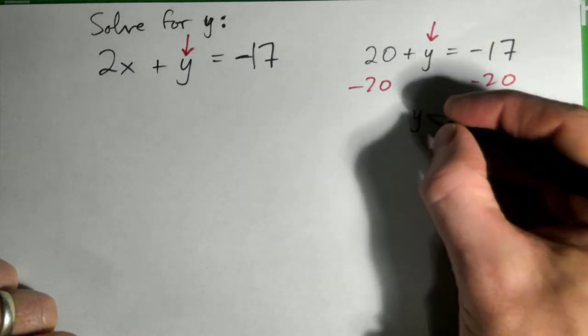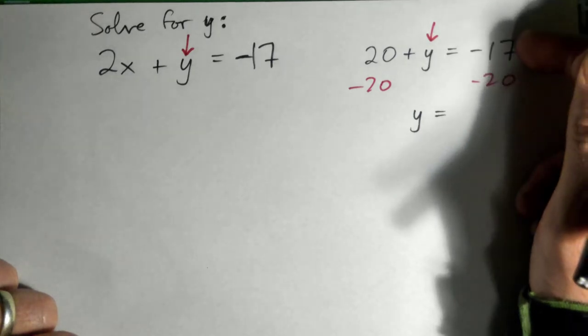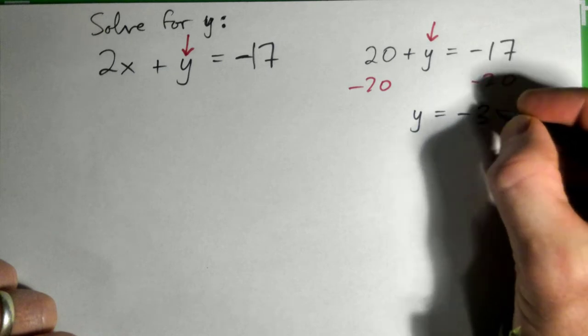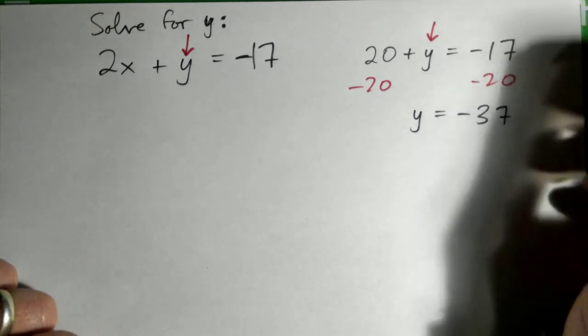Right, right, negative 17, 17 negatives, adding to that negative 20, 20 negatives makes 37 negatives. 17 bad guys with 20 bad guys, 37 bad guys, good.